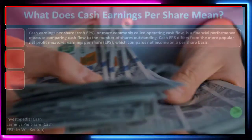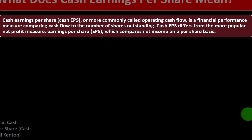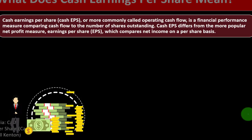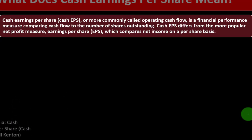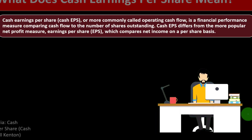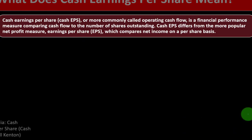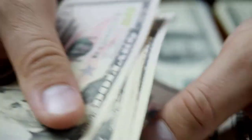Cash Earnings Per Share — Cash EPS — more commonly called operating cash flow, is a financial performance measure comparing cash flow to the number of shares outstanding. Cash EPS differs from the more popular net profit measure, Earnings Per Share, which compares net income on a per-share basis. Financial statements are not on a cash basis; they're on an accrual basis — revenue is recognized when earned, expenses when incurred. The bottom line of the income statement is revenue minus expenses on an accrual basis.